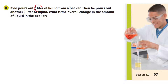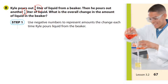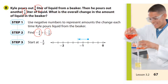Kyle pours three-fourths of a liter of liquid into a beaker, then pours out one-half of a liter. It looks like subtraction — what's the overall change? The negative numbers represent the amount Kyle pours out: three-fourths of a liter out, and then one-half of a liter out. We're removing them.